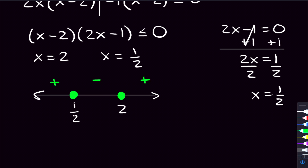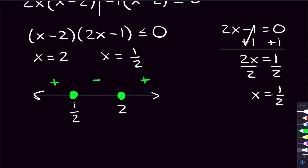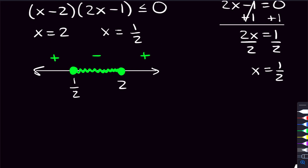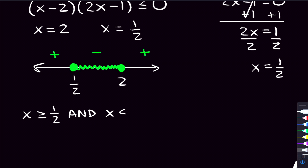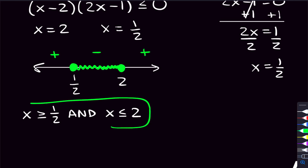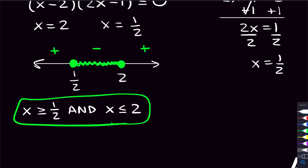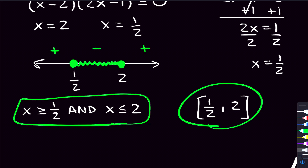So now we can look at where we're going to shade. We care about where this quadratic is equal to zero — that's what the closed dots were about — but we also care about where it's less than zero, and that's going to be where it's negative: in between one half and two. We can write that as x is greater than or equal to one half and x is less than or equal to two. In interval notation, the interval goes from one half to two, and we include both endpoints, so we use brackets: [1/2, 2].